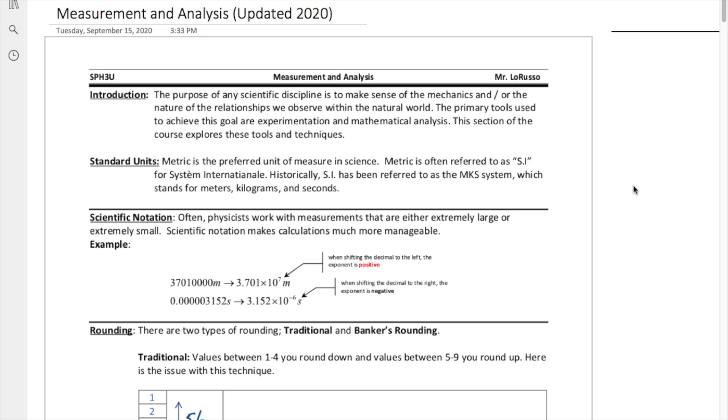We're going to start talking about standard units. Metric is the preferred unit of measurement in science. Metric is often referred to as SI, which stands for Système International. That is supposed to be pronounced in French because metric was invented by the French. SI has also been referred to as the MKS system, which stands for meters, kilograms, and seconds. This is more specific to physics.